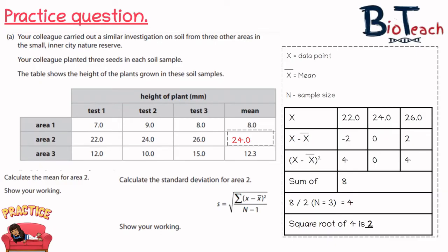The next value I've put in is x minus x-bar, which is basically my data point minus the average. So 22 minus 24 is minus 2, 24 minus 24 is 0, and 26 minus 24 is 2. The next step is to square them: minus 2 squared is 4, 0 squared is 0, 2 squared is 4, and then I've added those sums of the squares together to get 8.